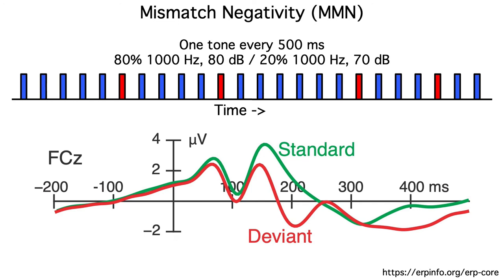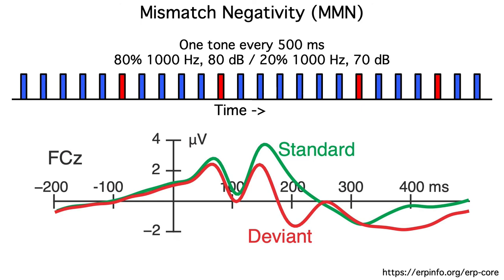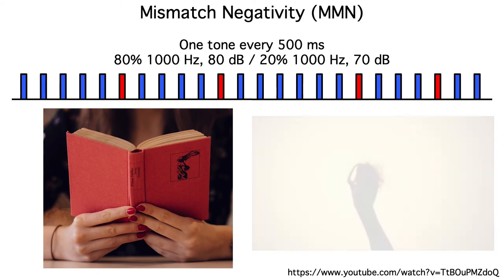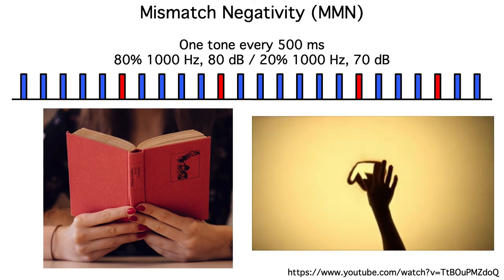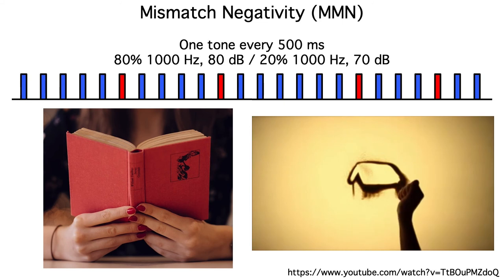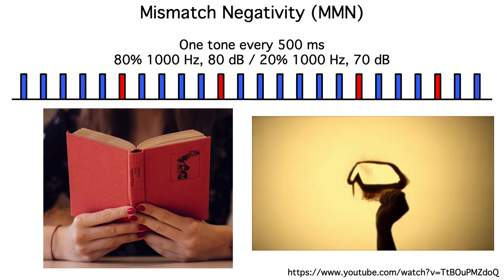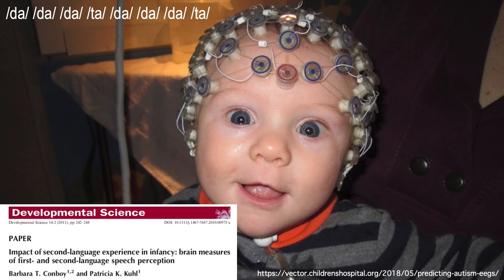The MMN doesn't require that the subject is performing a task — it's an automatic response to the mismatch. In fact, many researchers record the MMN while subjects read a book. In the ERP-Core, we had subjects watch a silent movie while the tones were playing. The fact that you don't need a task makes the MMN well-suited for use in infants, where it's been used to study the development of phoneme discrimination.